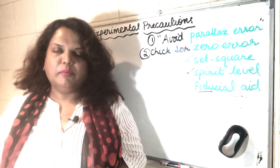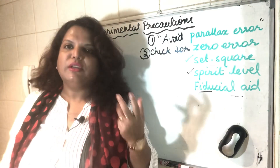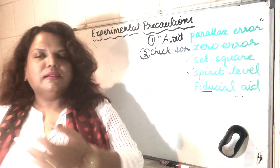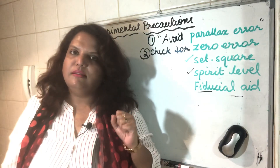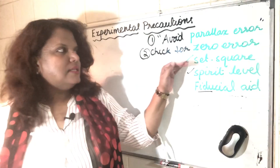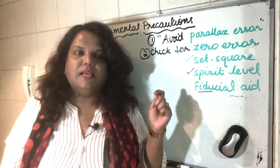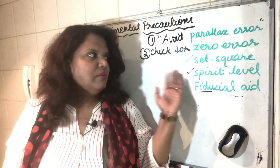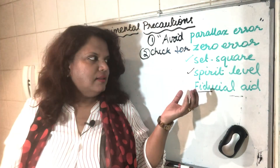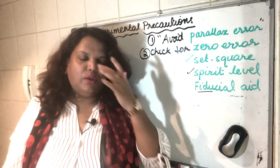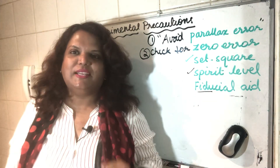To summarize: all five points — parallax error, zero error, set square, spirit level, and fiducial aid — are important precaution terminologies. Check for zero error and avoid parallax error are applicable in most experiments. Set square, spirit level, and fiducial aid apply specifically where relevant. I hope their meanings and when to use them are all clear. See you in the next class.